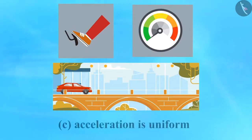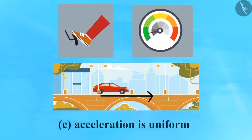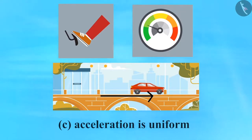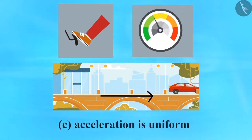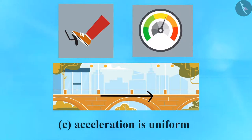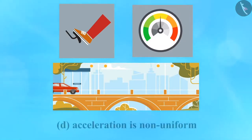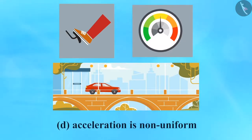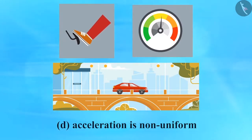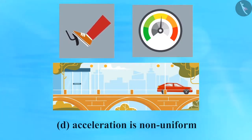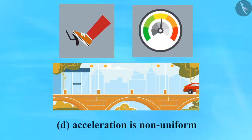C: Acceleration is uniform — when the driver pushes the accelerator pedal and holds it at a certain position, the speed increases at a uniform rate. D: Acceleration is non-uniform — the driver pushes and releases the accelerator pedal repetitively for different time intervals, which gives the car jerks along with the increase in speed.